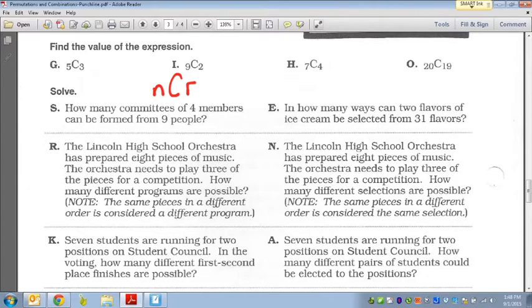Another classic example would be, you have a committee, but in this committee you have a president, secretary, vice president. Those specific positions have to be filled in order. That's a permutation. Whereas a combination, you have these committee members, we have to pick four for the committee. They don't have a title. They just need to join the committee. So that's a great example of a combination.